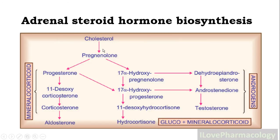In biosynthesis, from cholesterol, with the help of the enzyme desmolase, cholesterol gets converted to pregnenolone. From pregnenolone there are three pathways. The first pathway is the mineralocorticoid pathway: pregnenolone is converted into progesterone, then into 11-deoxycorticosterone, then to corticosterone, and finally it forms aldosterone.